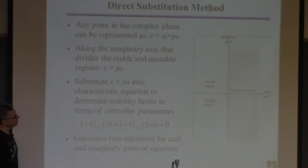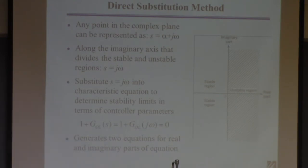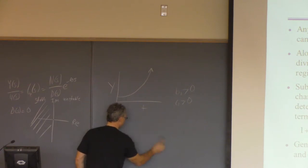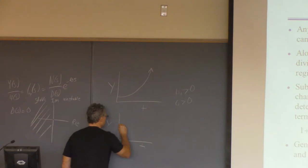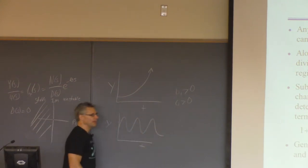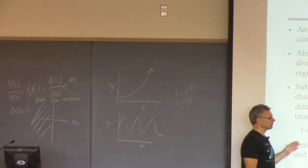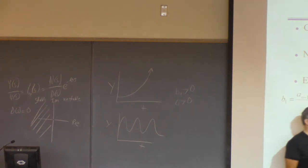This allows you to determine more information than before: both the range of stability for Kc and the value of omega. Omega represents the frequency of oscillations when the system is just barely stable — sustained oscillations at the stability boundary. So from this you can do controller tuning. We're not tuning a controller right now; we've just decided what values of Kc not to pick — not less than minus 1, not greater than 12.6.